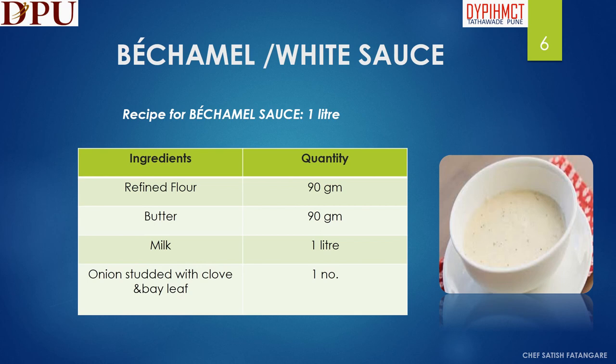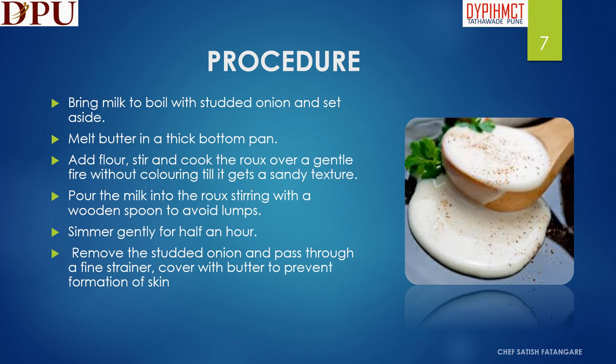In this slide we will discuss about the béchamel or white sauce. The ingredients required to prepare 1 liter of béchamel sauce are refined flour, butter, milk, onion studded with clove and bay leaf. To prepare white sauce: bring milk to boil with studded onion and set aside. Melt butter in a thick bottom pan, add flour, stir and cook the roux over a gentle fire without coloring till it gets a sandy texture. Pour the milk into the roux, stirring with a wooden spoon to avoid lumps. Simmer gently for half an hour. Remove the studded onion and pass through a fine strainer. Cover with butter to prevent formation of skin.